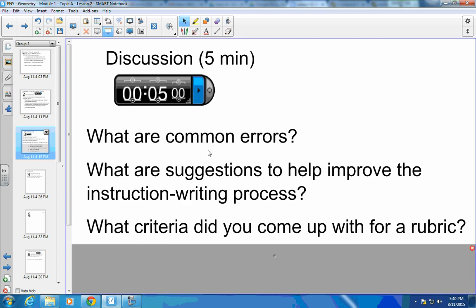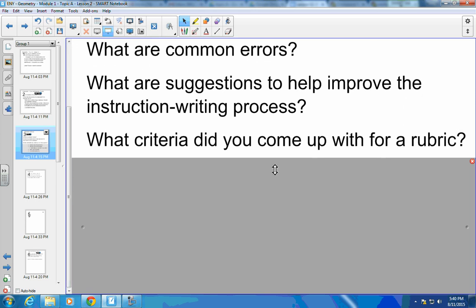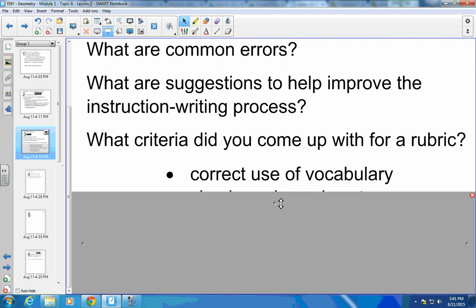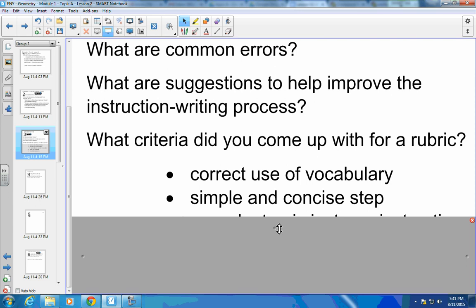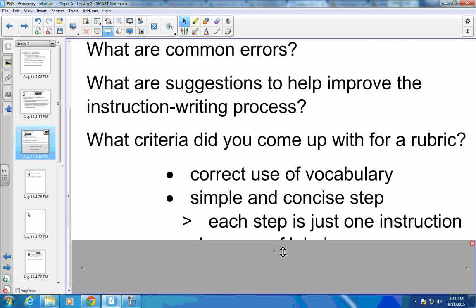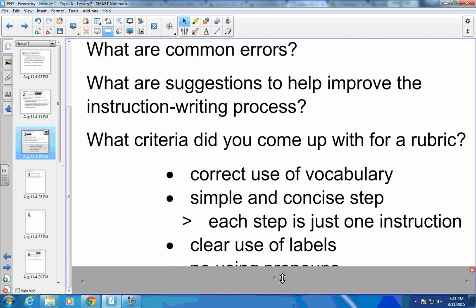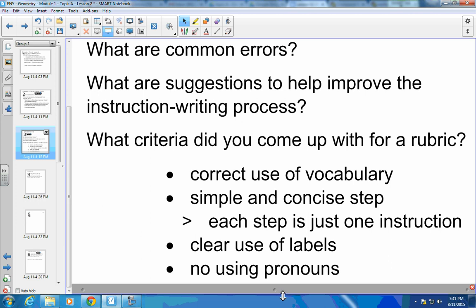Some common errors that you found - hopefully you found some problems with the vocabulary that they were using or you were using. Maybe you weren't clear on your steps. Maybe you were using words such as 'take that point' instead of which point you actually mean. Maybe you're not labeling it correctly. So criteria for a rubric: using the correct vocabulary the correct way, be simple and concise in your steps, each step should be one instruction, make sure you label everything. And lastly, don't use pronouns like that, this, it, or over to there. Make sure you're very clear with your labels.